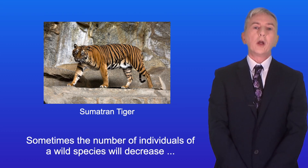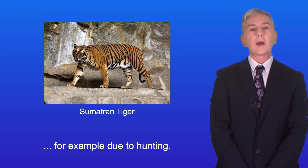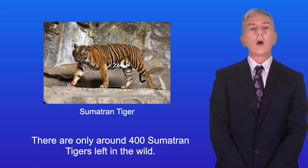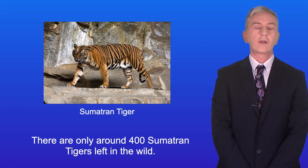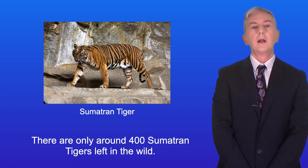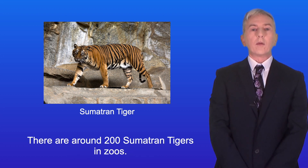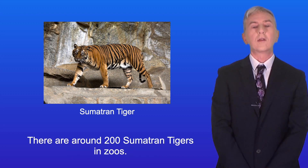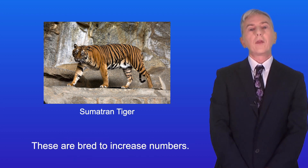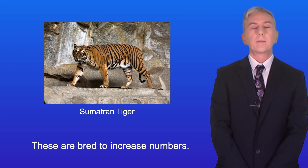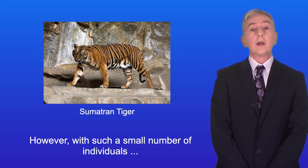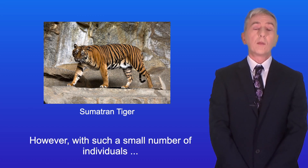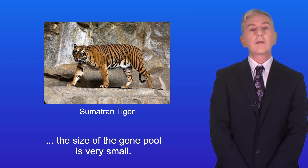Sometimes the number of individuals of a wild species will decrease, for example due to hunting. There are only around 400 Sumatran tigers left in the wild, and around 200 Sumatran tigers in zoos which are bred to increase numbers. However, with such a small number of individuals the size of the gene pool is very small.